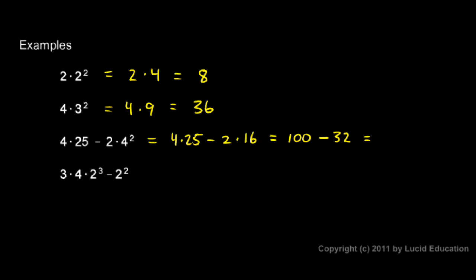Notice I'm doing the problem in steps. I'm not trying to do this all at once. I'm rewriting it here in one step, and then in another. And in each step, it gets a little bit simpler. 100 minus 32 we can probably do in our heads. If not, just work it out. But it comes out to 68.